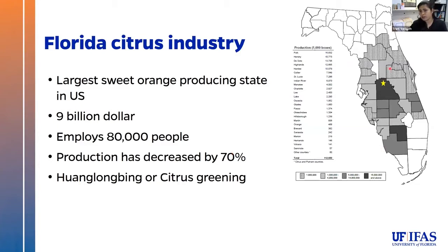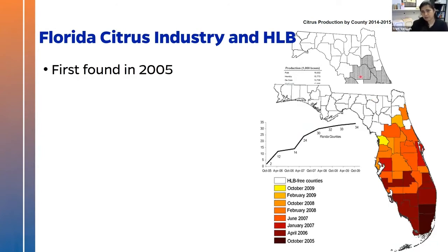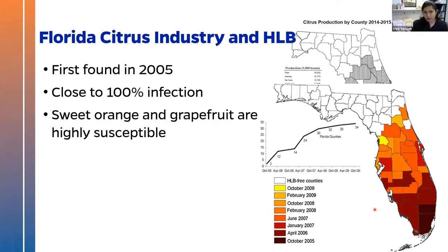HLB was first found in Florida in 2005, and within four years, by 2009, pretty much the entire state was affected. Currently, we have close to 100% infection within Florida. There are very few healthy trees remaining — perhaps some new plantings. Sweet orange and grapefruit, which are the main crops produced in Florida, are both highly susceptible to HLB.